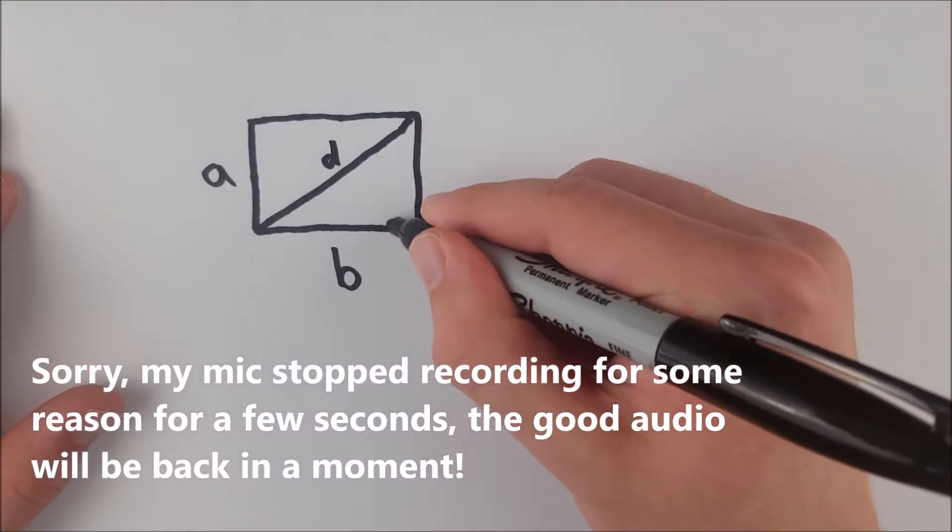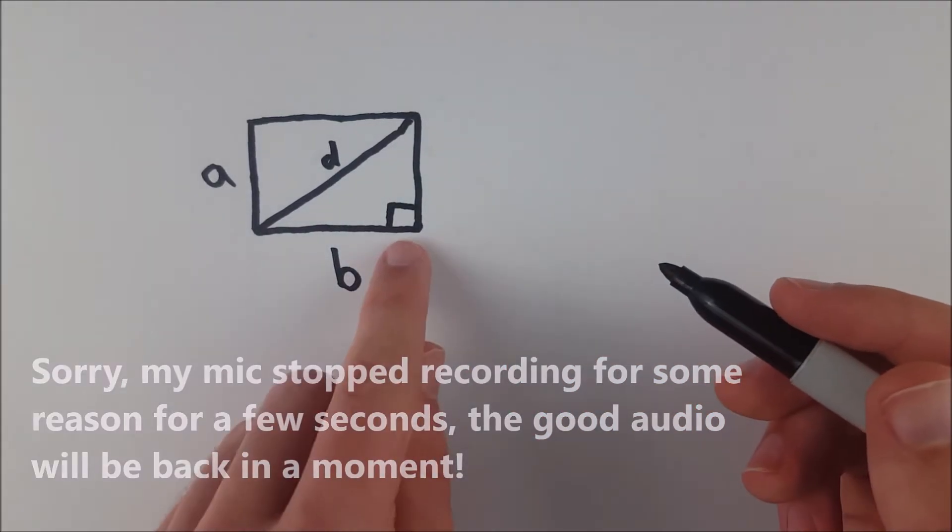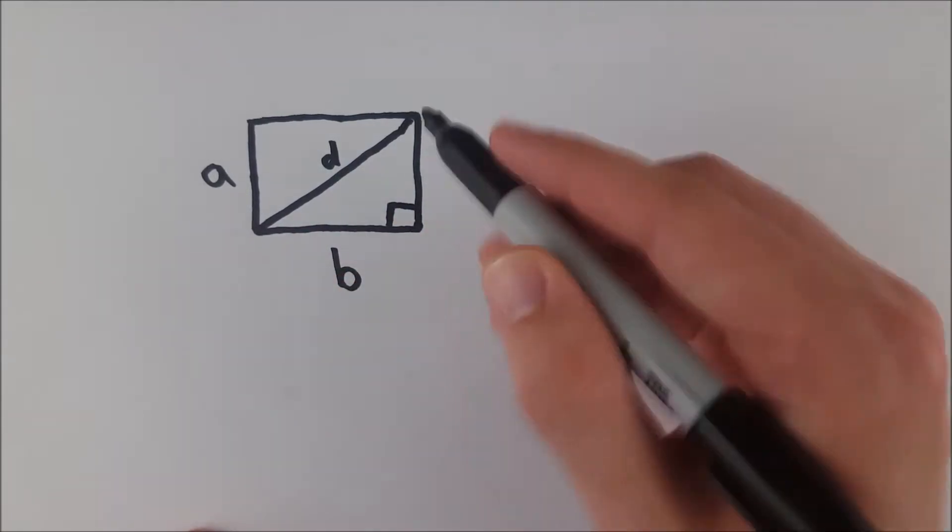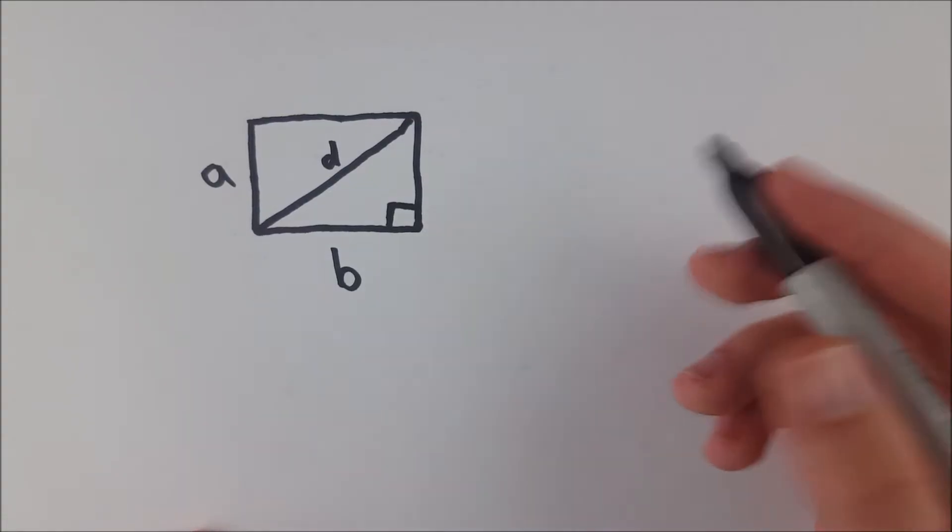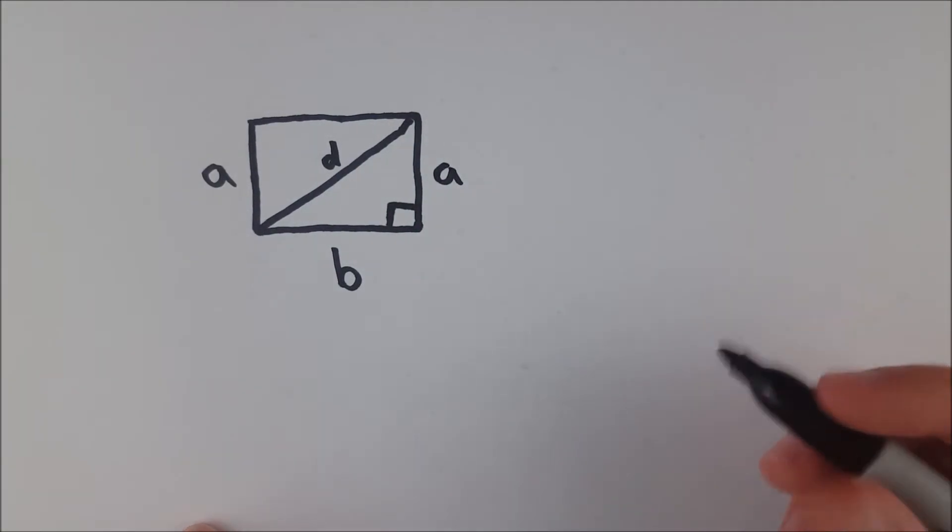Well, using the Pythagorean theorem, which we know we can use, we know that that applies here, because by definition of a rectangle, this angle's 90 degrees, so this is a right triangle, and then also by definition of rectangle, this side has a length of a.